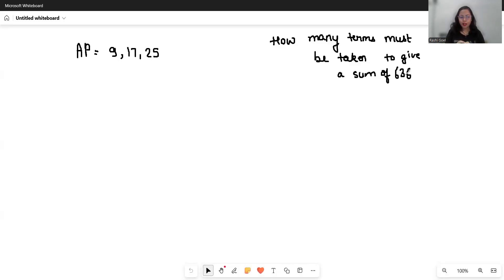Hello everyone, welcome to my channel. We are going to solve if an AP is given 9, 17, 25, and we have to find how many terms must be taken to give a sum of 636.